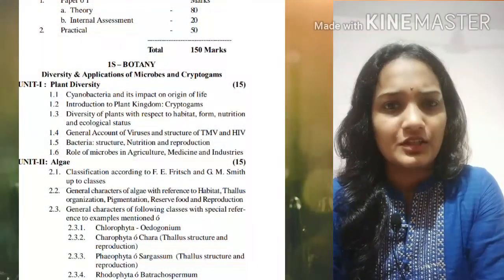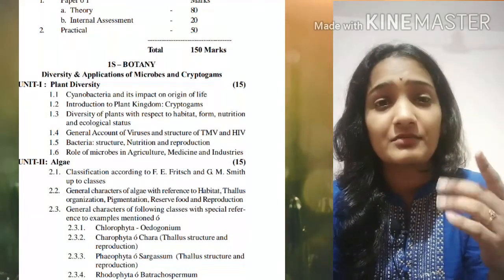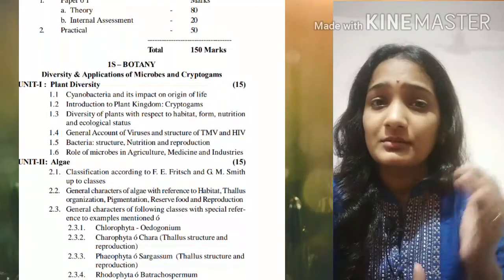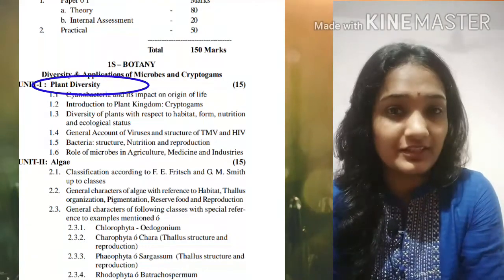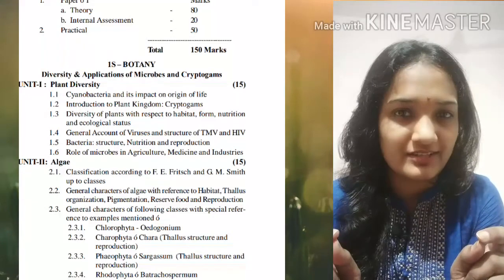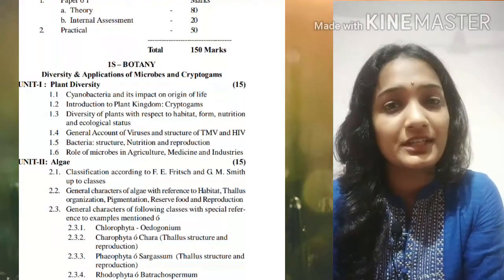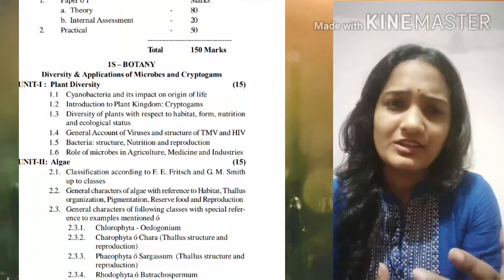I am going to cover the first unit of your syllabus, which is plant diversity. The next units are fungi, bryophytes, and pterophytes. These units are included in the first unit of plant diversity, which also covers bacteria, viruses, and plant diversity — what is fungi, what are bryophytes. This is basic information about plant diversity.